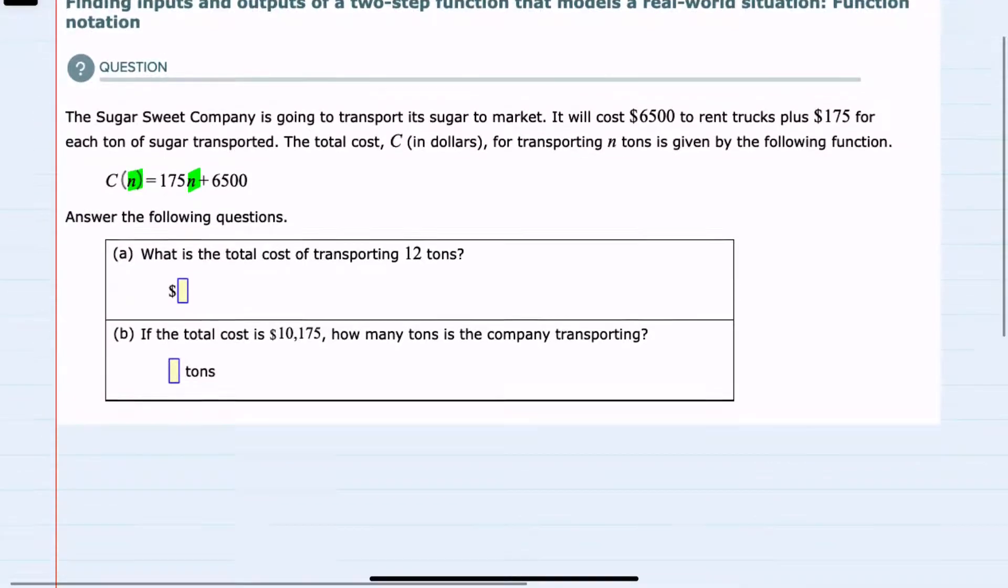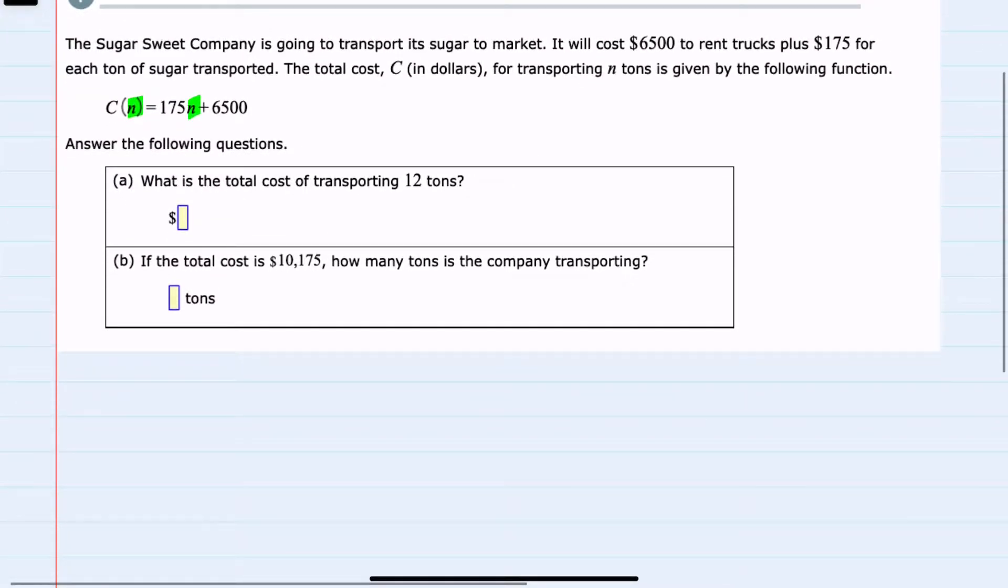And we're given two questions, A and B. First, in A, we're asked what is the total cost of transporting 12 tons. Since we're given the tons and we're asked to find cost,